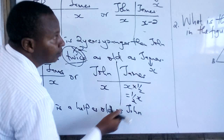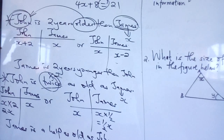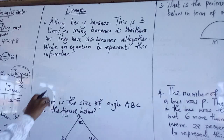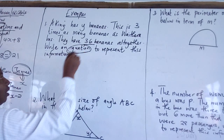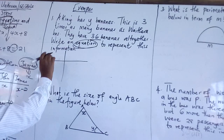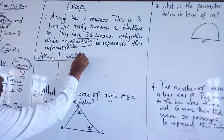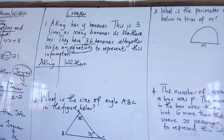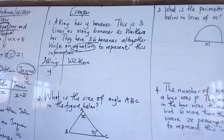Let's look at some examples. The first one: Kidney has some bananas — this is three times as many bananas as Waidera has. They have 36 bananas altogether. Form the equation. First, identify the personalities: we have Kidney and Waidera. We are told to use Y to represent the number of bananas Kidney had. So Y represents the number of bananas Kidney has.